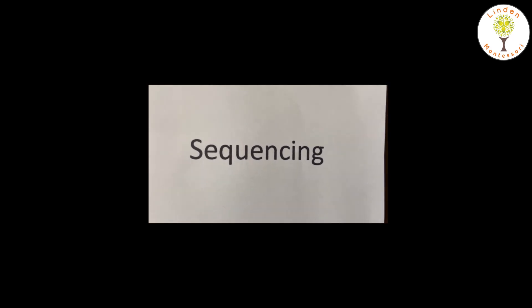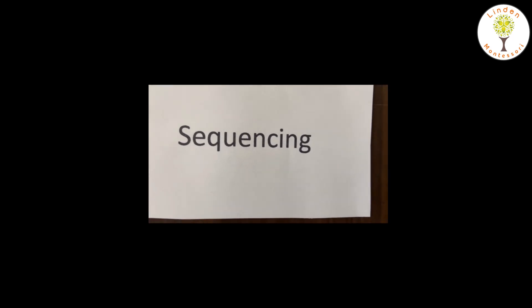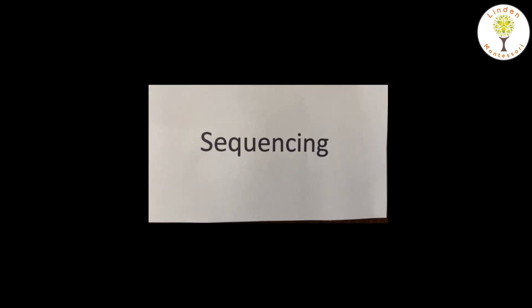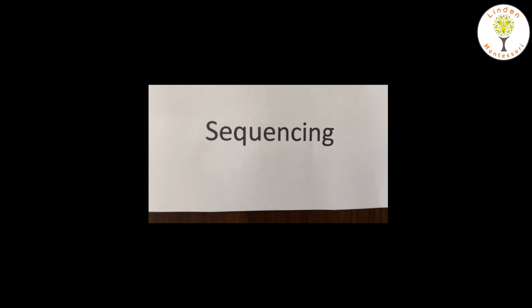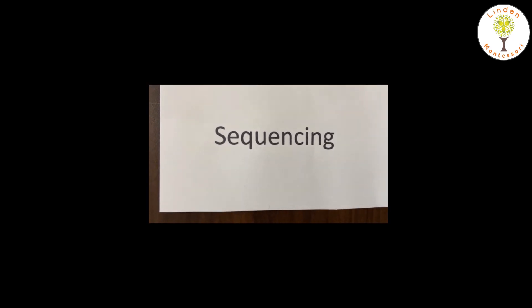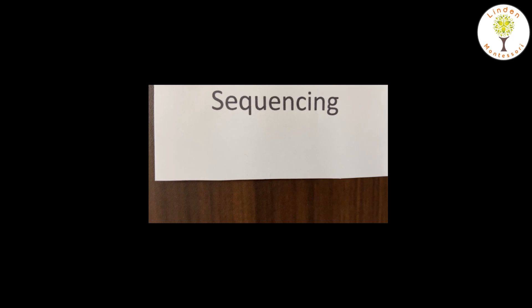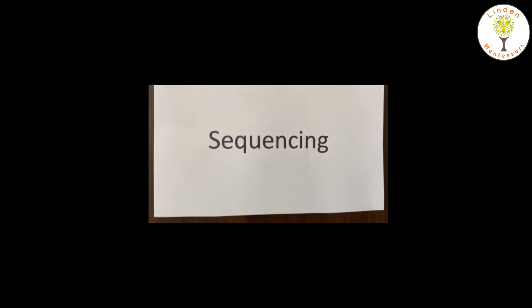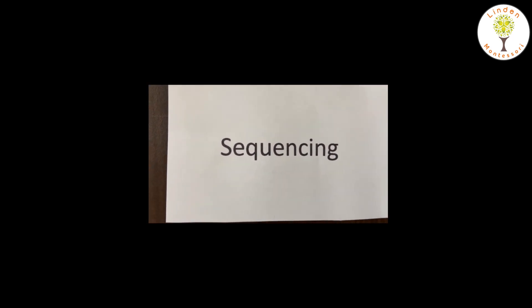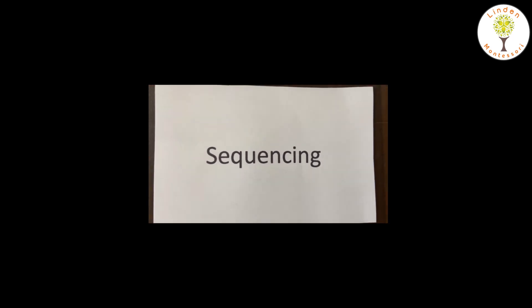What is sequencing? Sequencing is the order in which the events occur in a pattern. When things or events happen in an order, they form a sequence. It's very important to learn sequencing, which helps in development. We can observe sequencing in our everyday activities. We can't change the order — it occurs in a particular order.